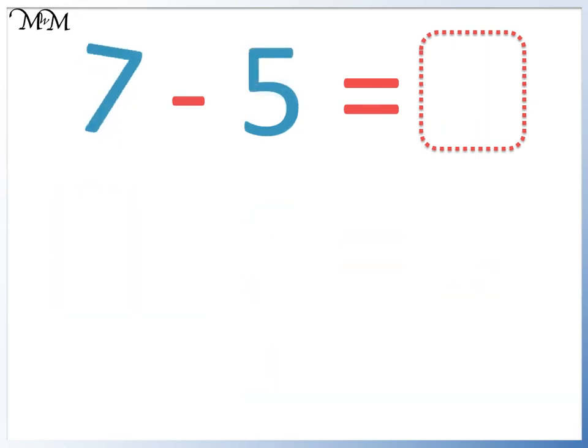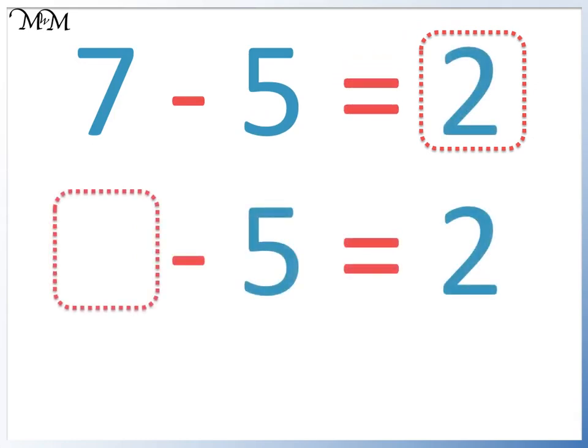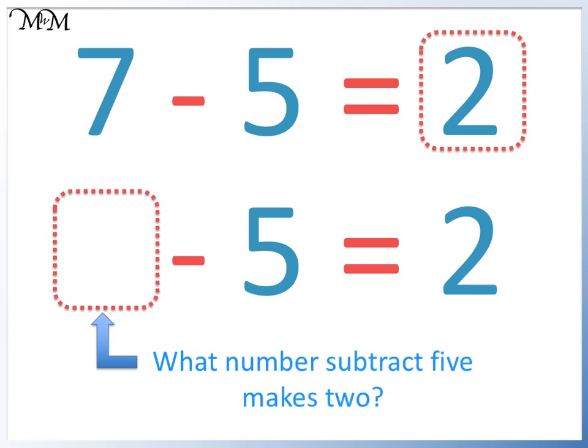Here we have 7 take away 5, which equals 2. If we are asked for this missing number at the start of our subtraction sentence, it means what number subtract 5 makes 2. We can work this out by adding the two other numbers, 2 and 5. We get 7.